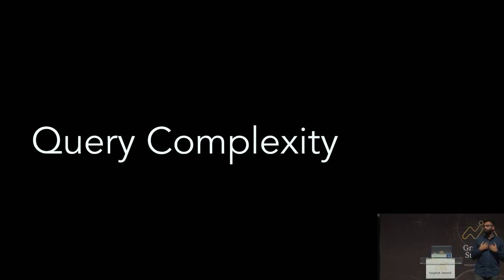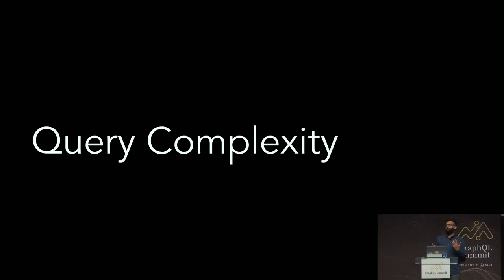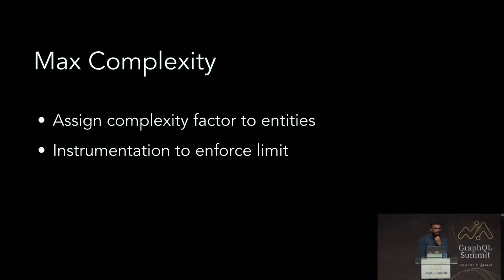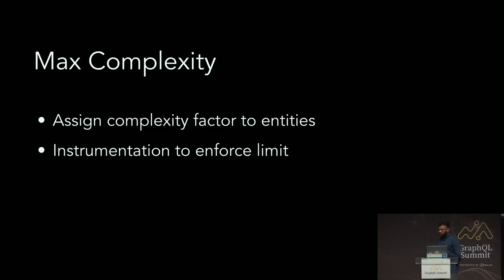The next issue we had to deal with, like everybody else who has tried to take a GraphQL system to production, is how to deal with query complexity. If you are not careful, it is very easy to build a GraphQL system that is an invitation for people to perform a denial of service on your system. The approach we ended up taking was to always compute the complexity of a particular query or mutation on the fly, assign complexity factors to every entity that can participate in a potential output, and reject calls that exceed the threshold through instrumentations.